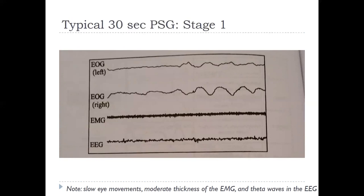This is a 30-second epoch — a point in time — of what the data looks like. The EOG on the top shows the left eye, below that the right eye, then the EMG for muscle movement, and the EEG at the bottom showing brain waves. You can see that muscle tonation is still present, and theta waves start to take over the EEG.